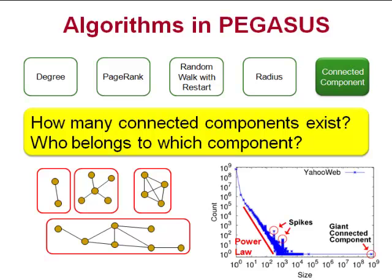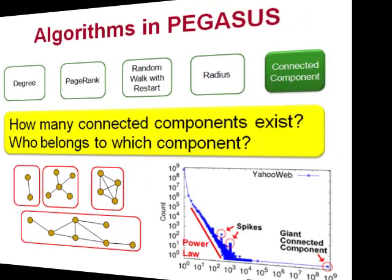For example, the size distributions of connected components in many real-world graphs follow the power law. A spike in such plots, which corresponds to many components having exactly the same number of nodes in them, will naturally prompt us to investigate further.